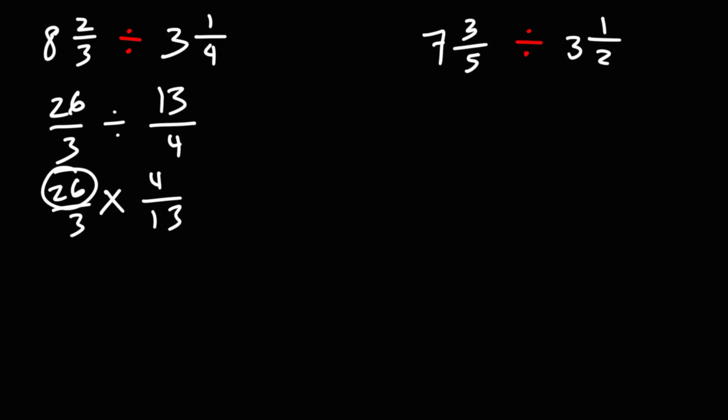Now notice that 26 is divisible by 13. So I'm going to rewrite this problem as, so 26 we can rewrite that as 13 times 2, 3 is 3 times 1, 4 is 4 times 1, and 13 I'm going to rewrite that as 13 times 1. So we could cancel a 13.